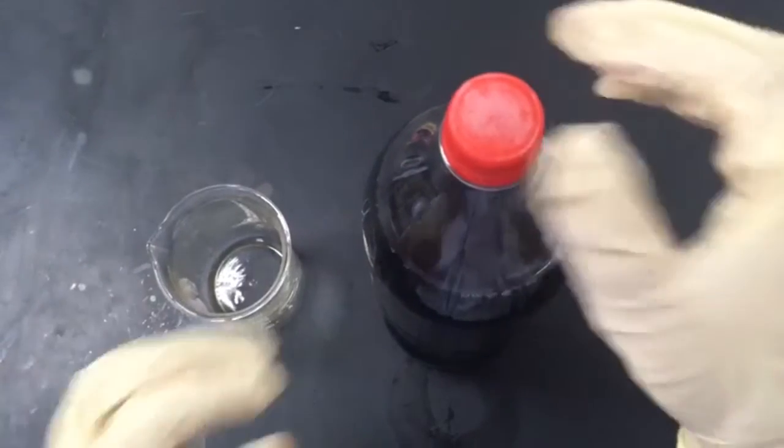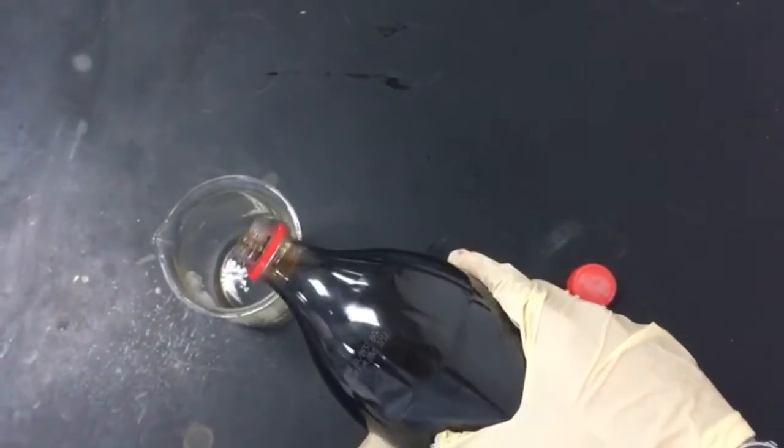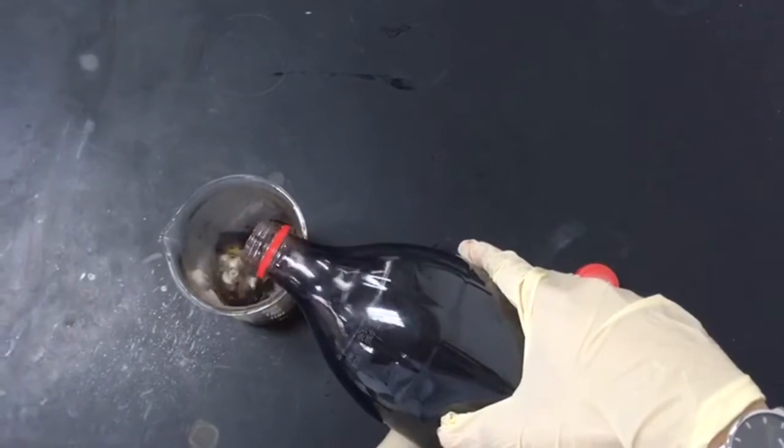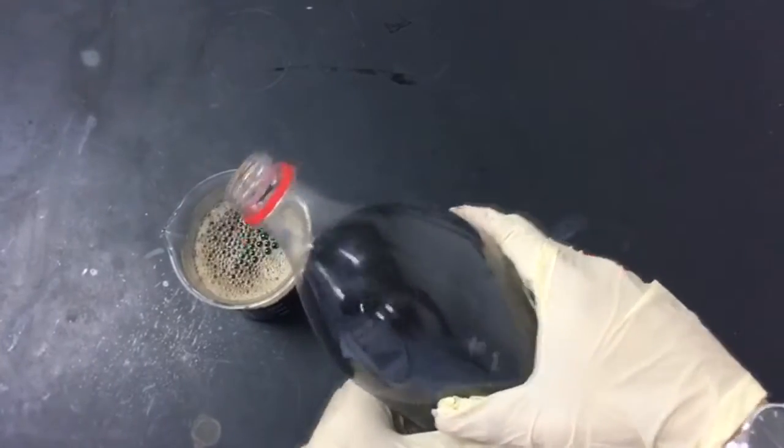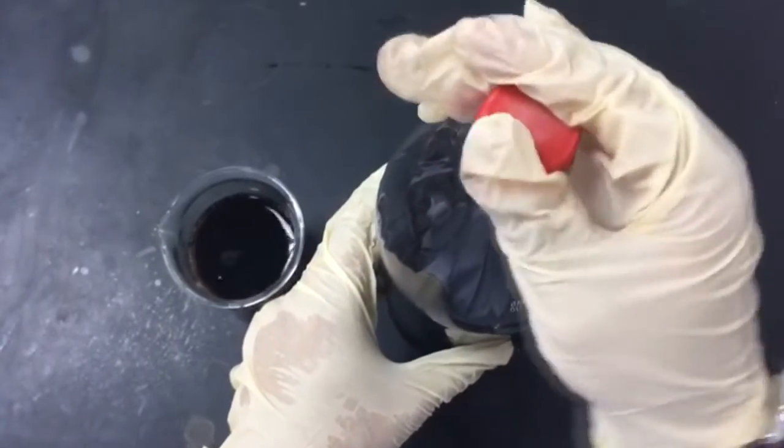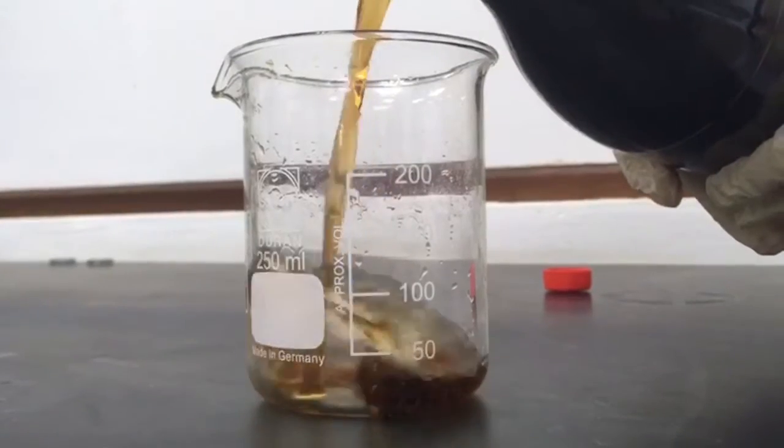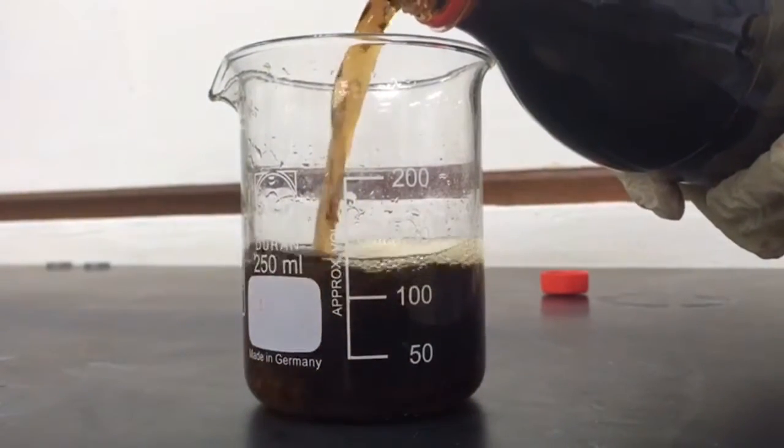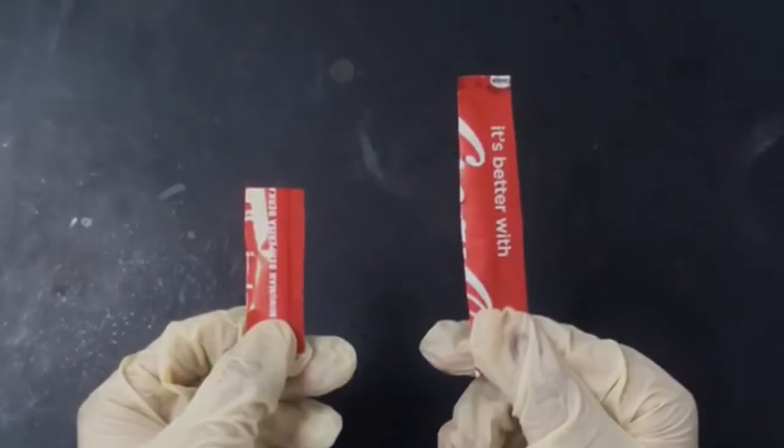First, we need to fill in the 200 ml beaker full of soda solution. Second, cut 8 cm and 5 cm of aluminum strips. First, cut 8 cm of aluminum strip from a soda can.